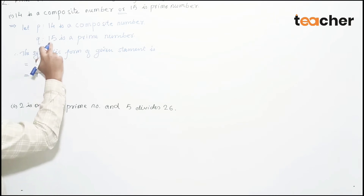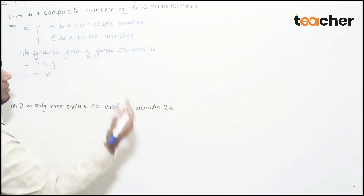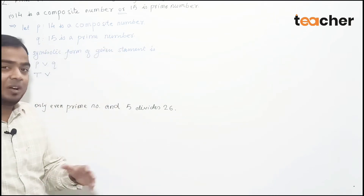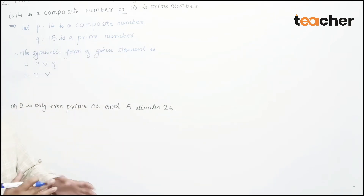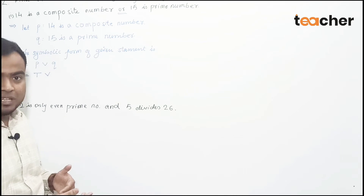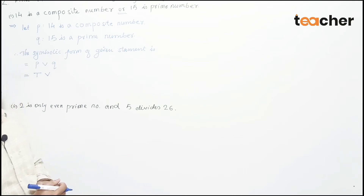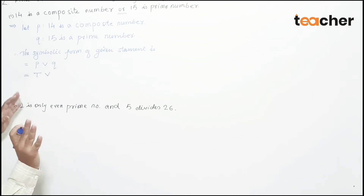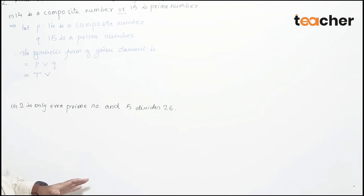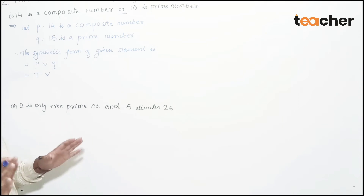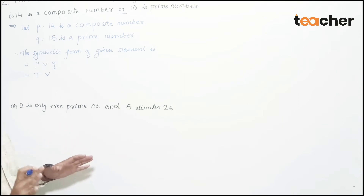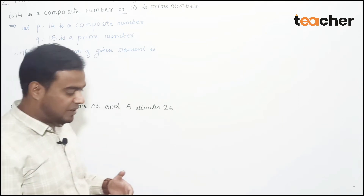So P is true. Now for Q: '15 is a prime number.' 15 is actually a composite number because it can be factorized as 3 × 5. Therefore 15 is not a prime number. A prime number is a number which cannot be factorized other than by 1 and itself.